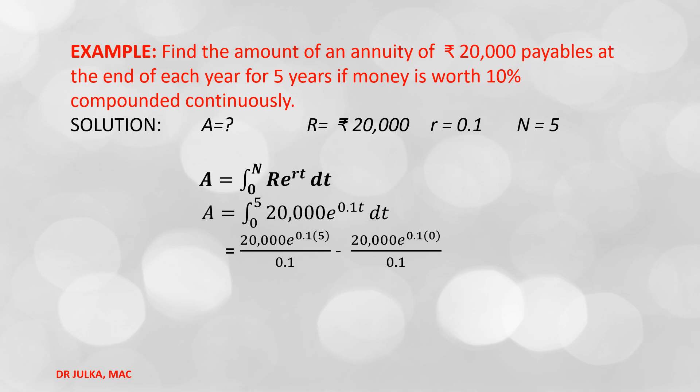After putting the upper and lower limits, we get 20,000 × [e^(0.1 × 5) / 0.1] minus 20,000 × [e^(0.1 × 0) / 0.1]. We get the future value of Rs. 1,29,744 and 25 paisa.